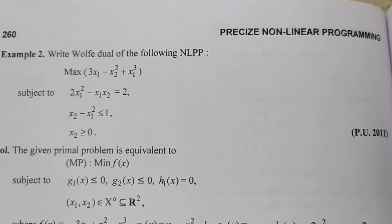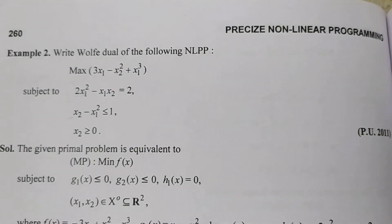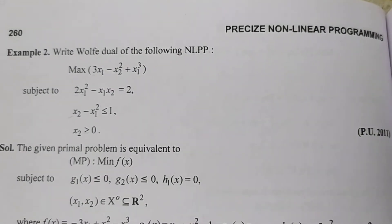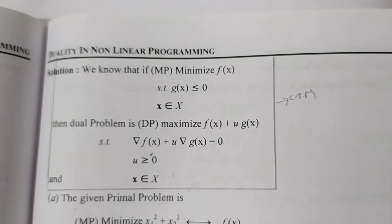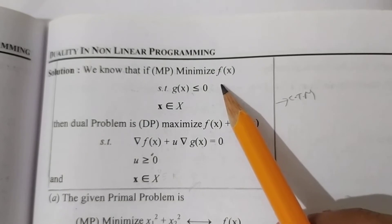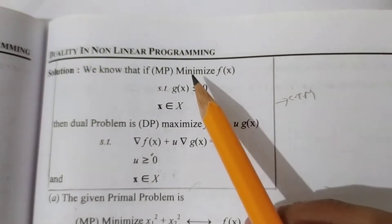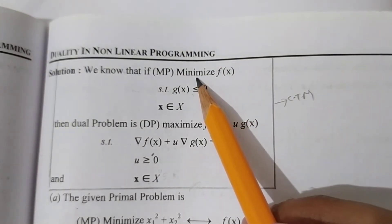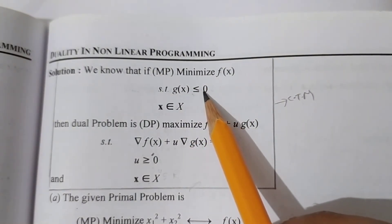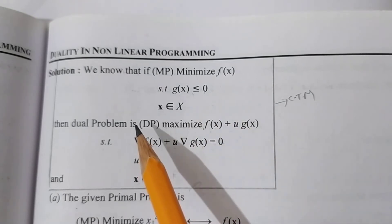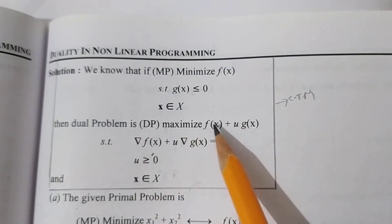पहला step हमारा क्या होता है? Function को हमने minimum लेकर आना है। जैसे example 1 में discuss किया था, problem को minimum में convert करना है, constraints को less than equal to 0 बनाना है। फिर उसको dual कैसे change करेंगे?